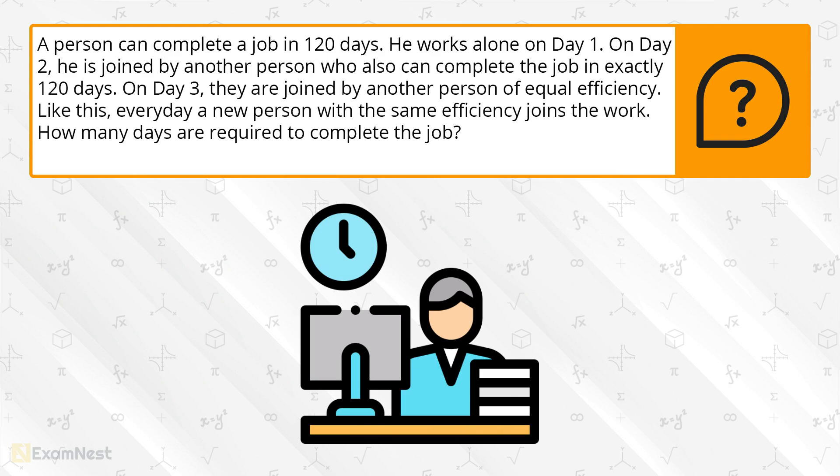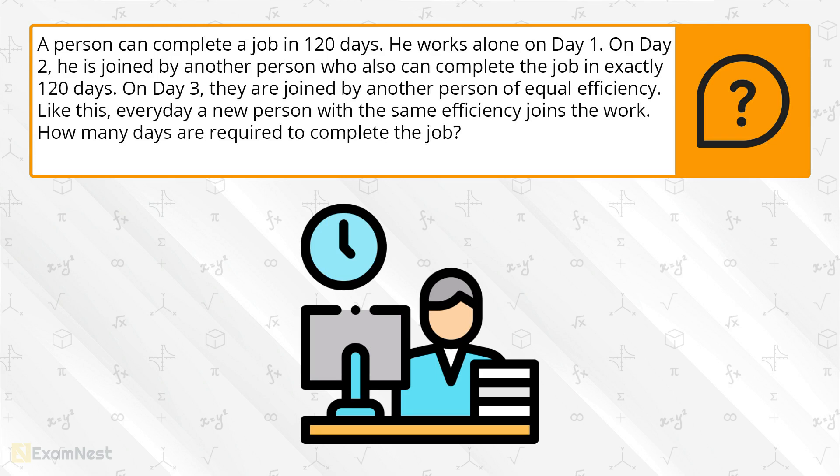A person can complete a job in 120 days. He works alone on day 1. On day 2, he is joined by another person who also can complete the job in exactly 120 days. On day 3, they are joined by another person of equal efficiency.